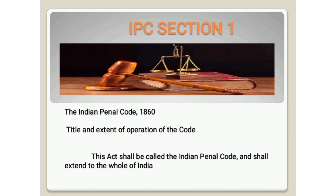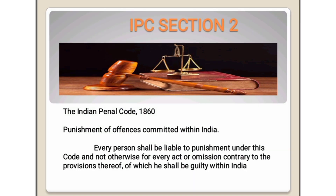Section 1 — Indian Penal Code 1860: Title and Extent of Operation of the Code. The act shall be called the Indian Penal Code (IPC) and shall extend to the whole of India, including Jammu and Kashmir, after February 21st, 2019.